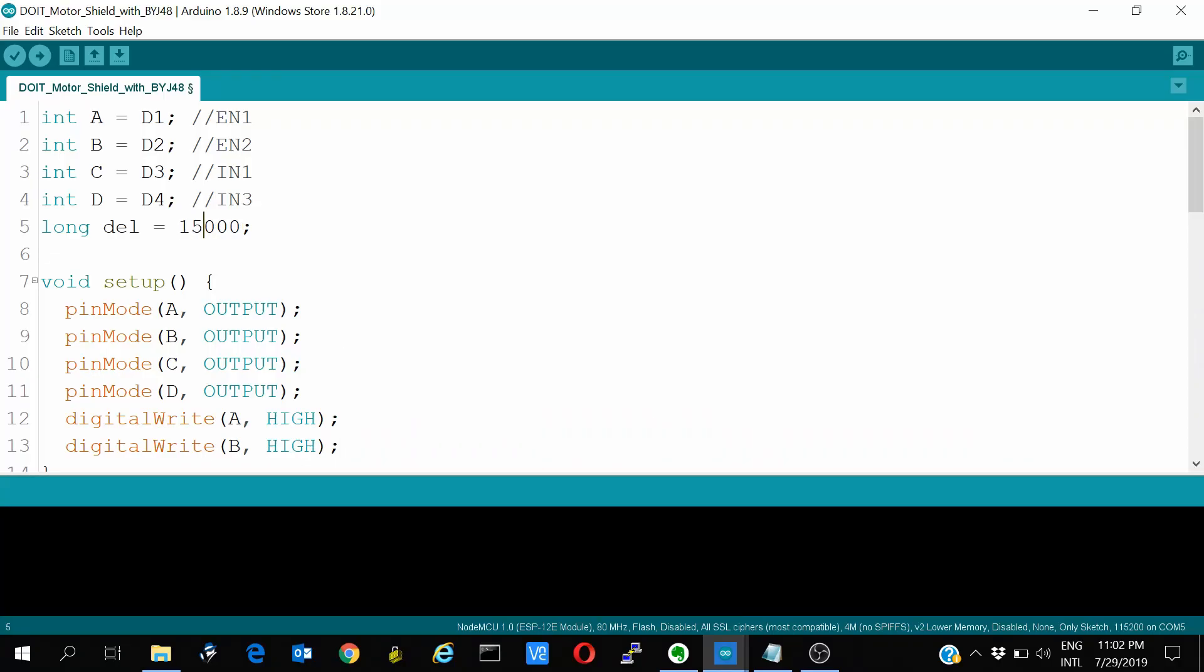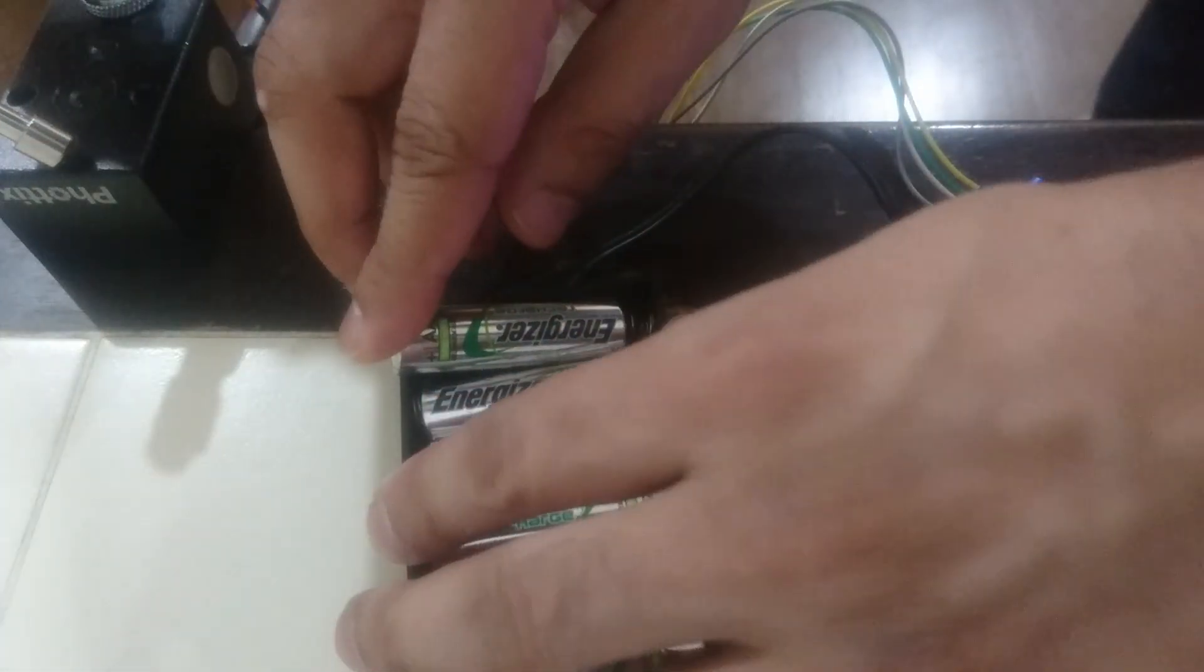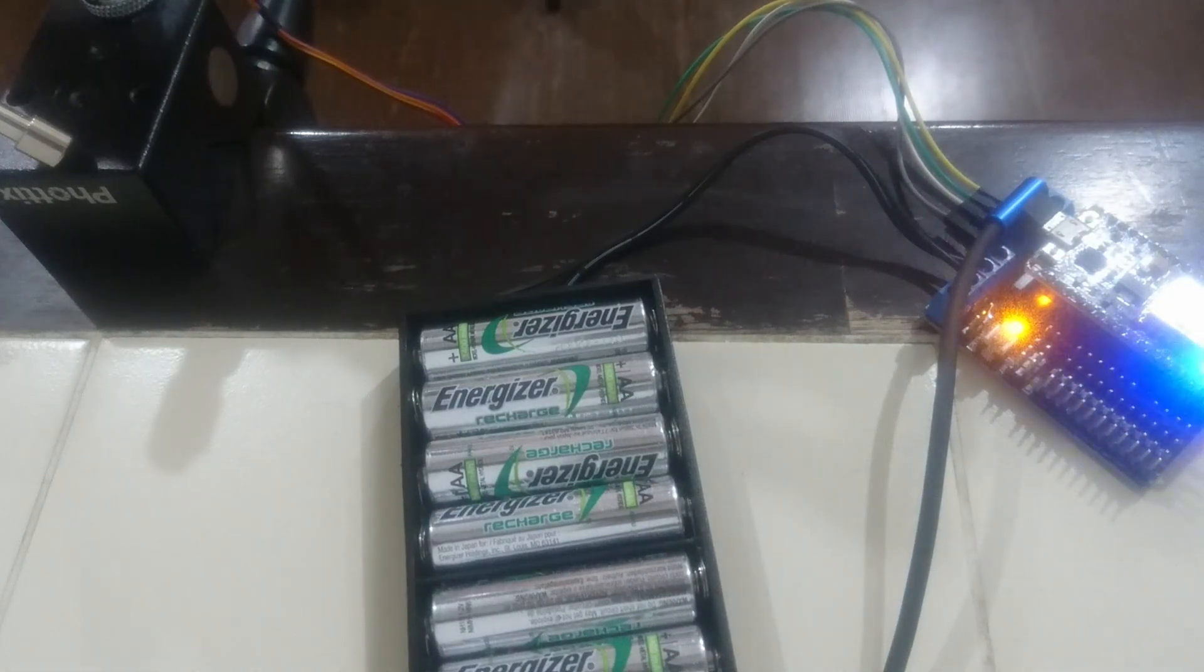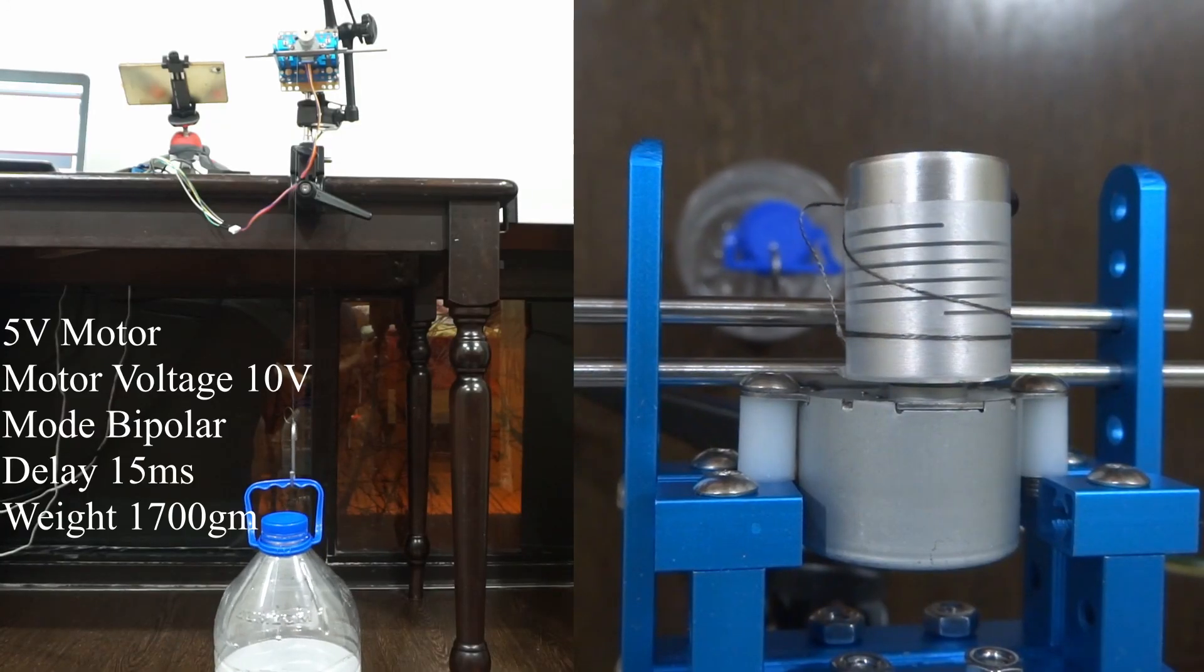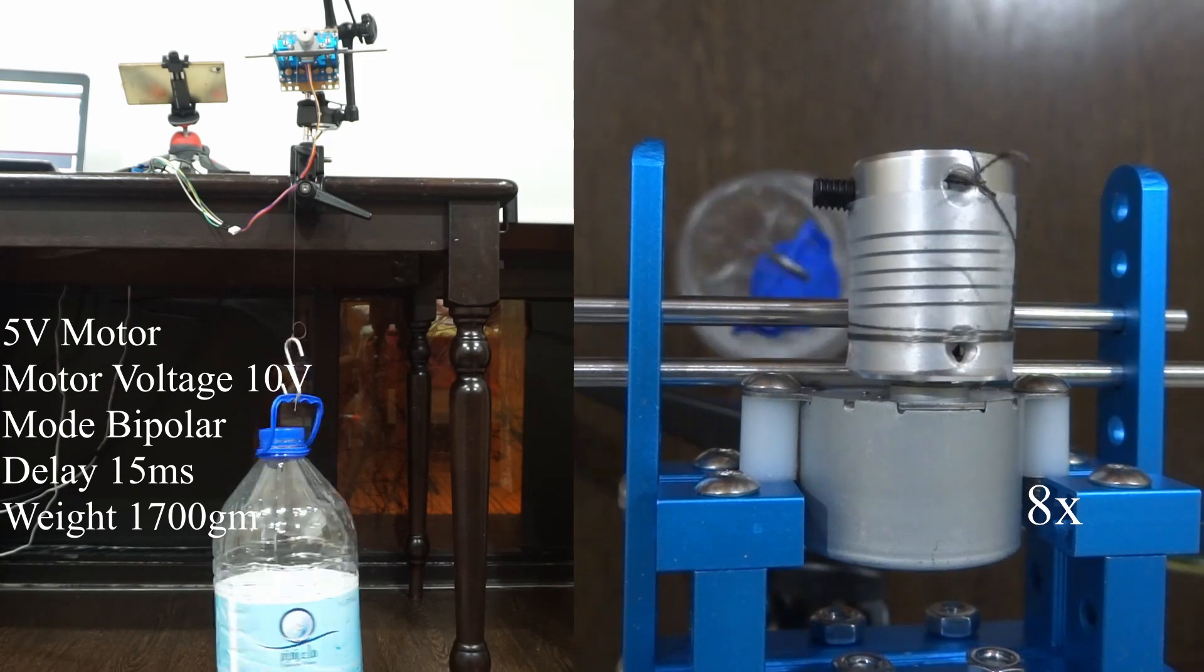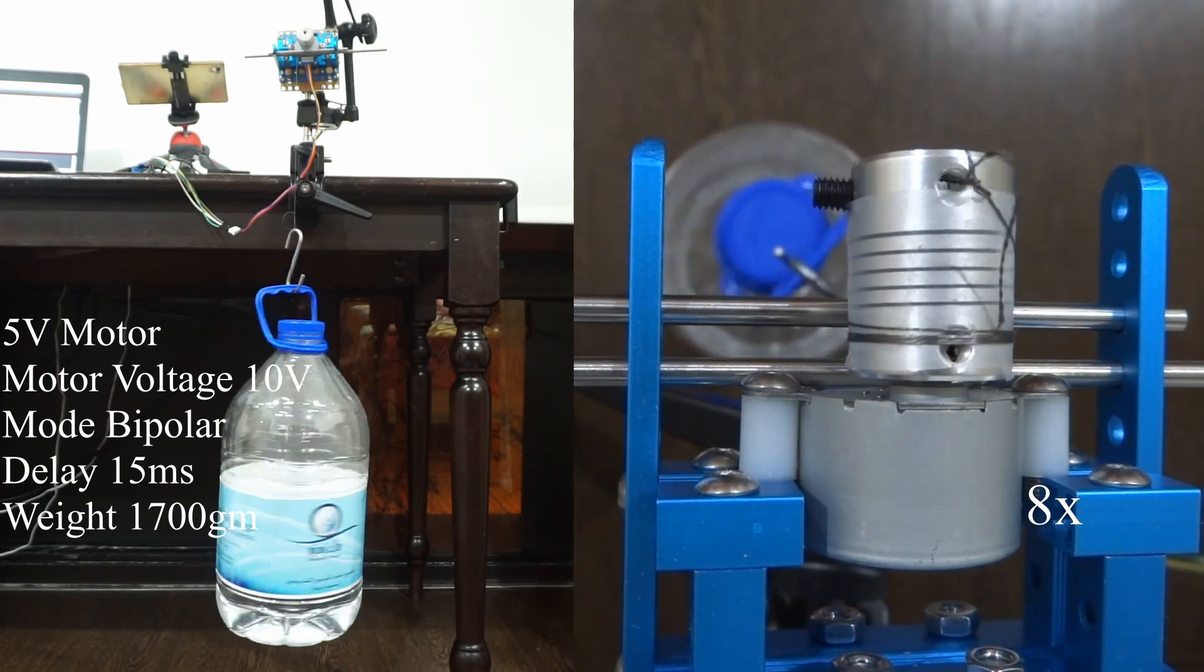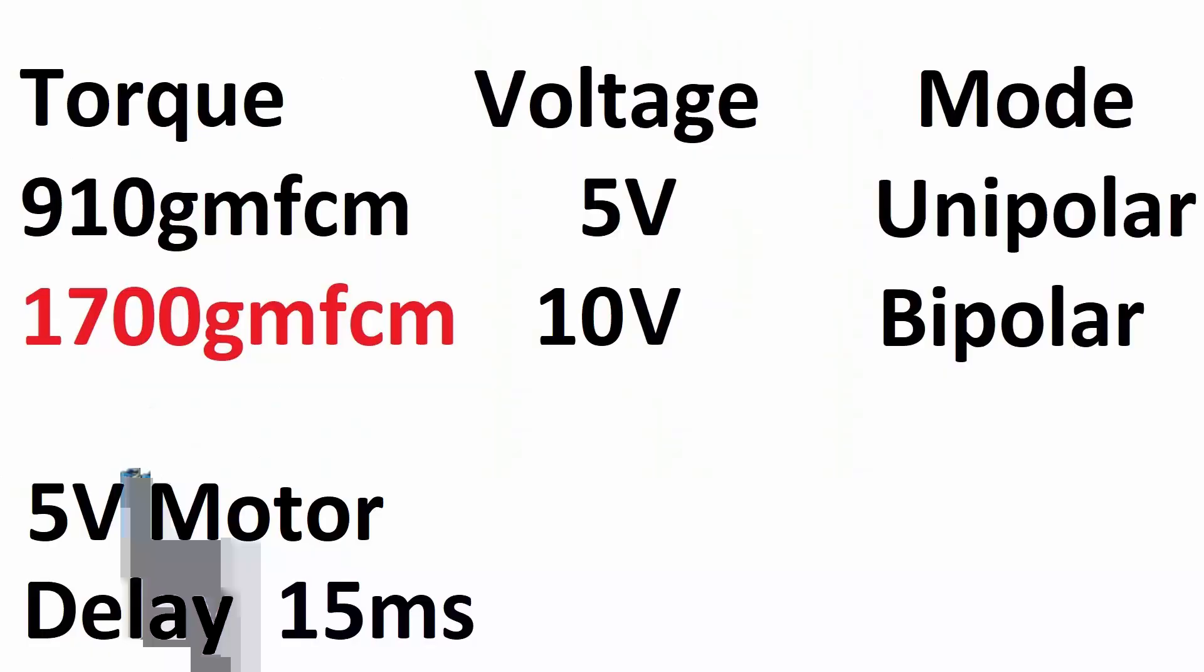The second way to increase the torque is by using the stepper motor in bipolar mode. This code is for stepper in bipolar mode. We will keep the delay same as before at 15ms because we know slowing the code increases the torque. So there is no point in testing at lower delays. We will use the Duet motor shield which has L293D IC which is a bipolar driver. And we will use the same 5V motor. The voltage applied now is doubled at nearly 10V with 8 1.2V batteries. The weight of the bottle is 1.7kg. So now the torque has almost doubled at 1700 grams force centimeter as compared to the unipolar mode.